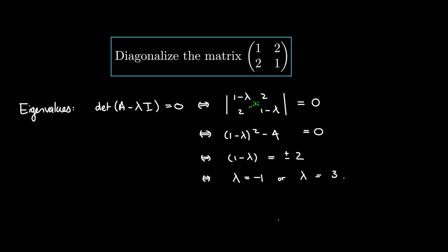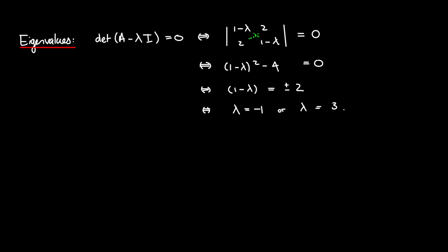Good, so we have the eigenvalues and now we can use them to find the eigenvectors. For each eigenvalue, we need to calculate the corresponding eigenvector. For lambda₁ equal to negative 1, we're solving for x — a generic 2-vector — which satisfies the eigenvector equation A*x = lambda*x. That's what it means to be an eigenvector.